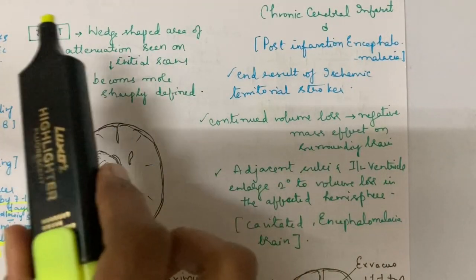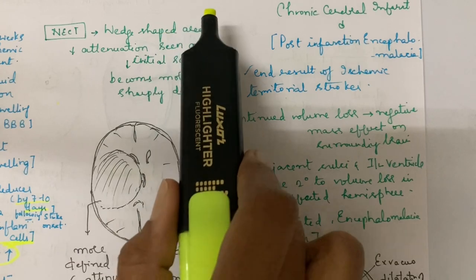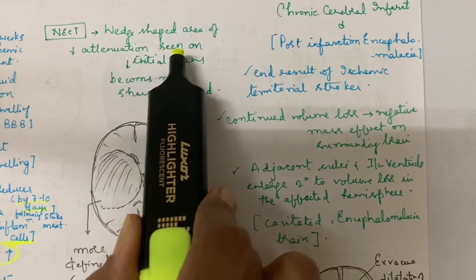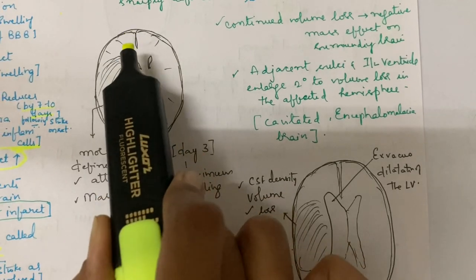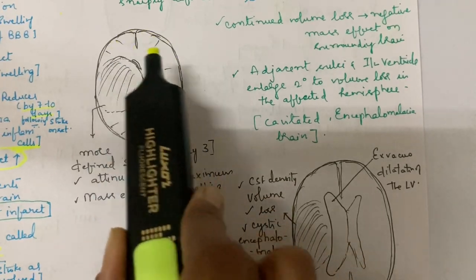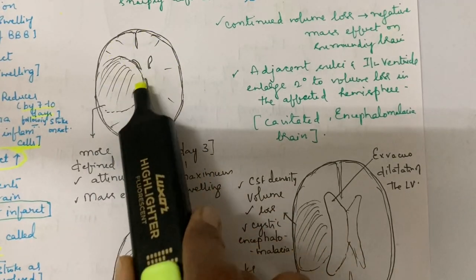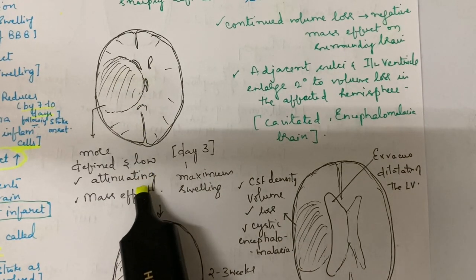In subacute infarct, CT findings show wedge-shaped area of decreased attenuation that becomes more sharply defined. During day three, there will be more edema and mass effect. Here you can see mass effect, well-defined area of infarct, and low attenuation.